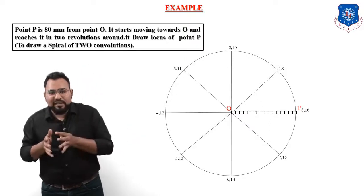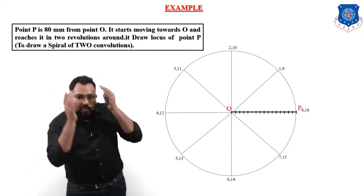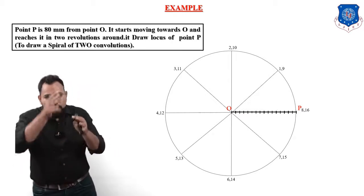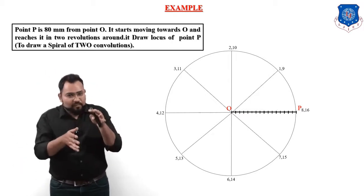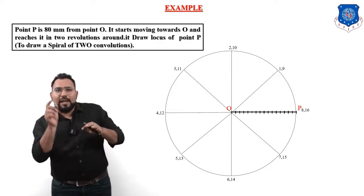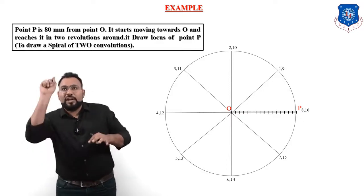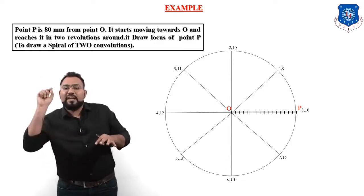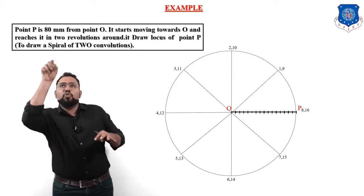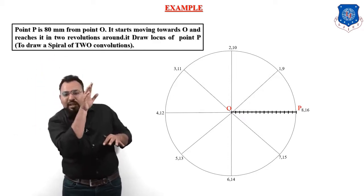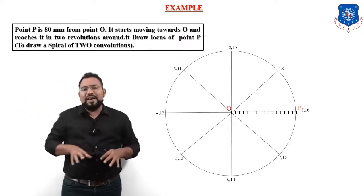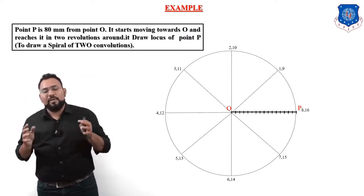So to be clear: the circle is physically divided into exactly eight equal parts, but because we are taking two convolutions we give overlapping numbering — first 1 through 8, then again 1,9 through 8,16 — so effectively treating the circle as having 16 equal divisions.